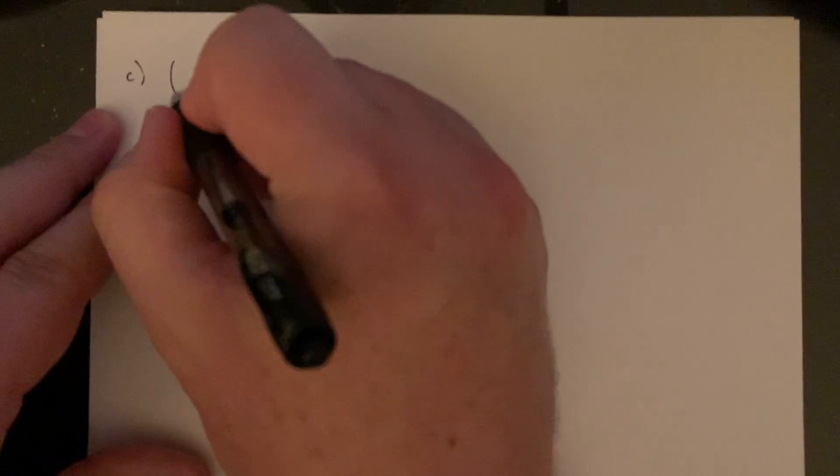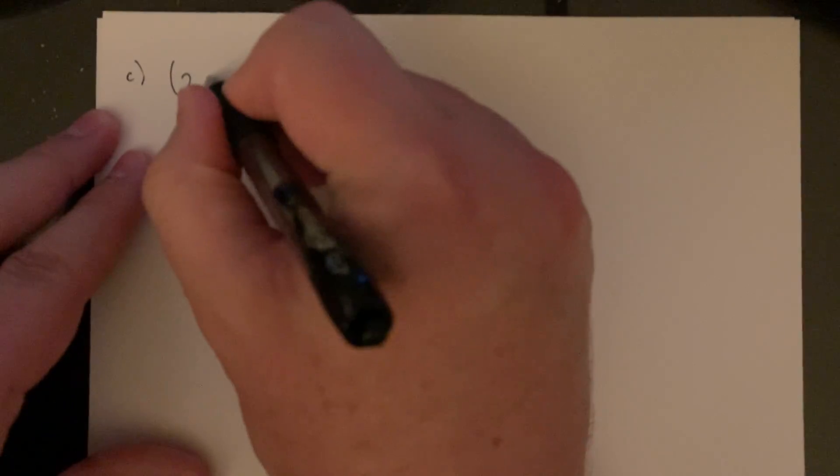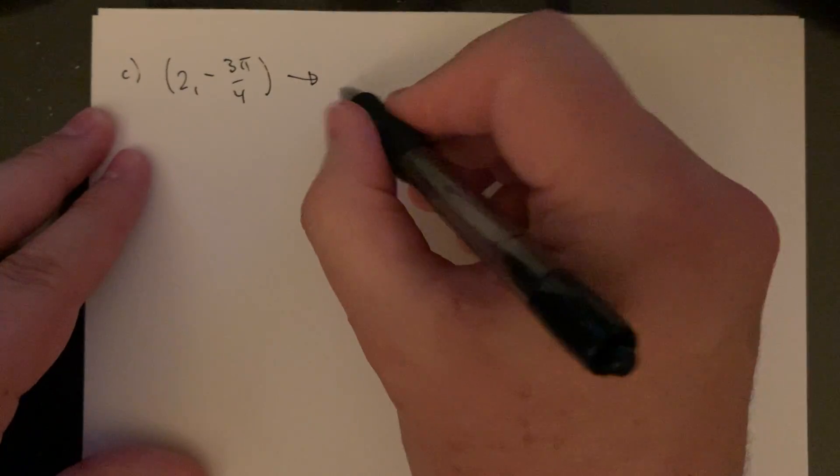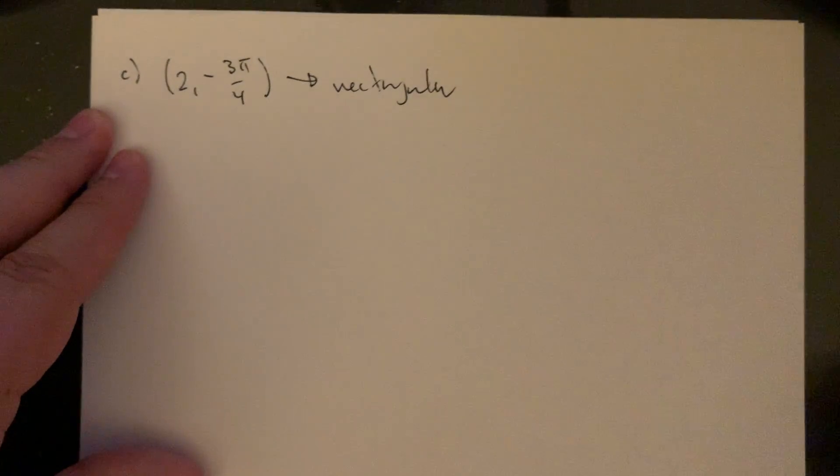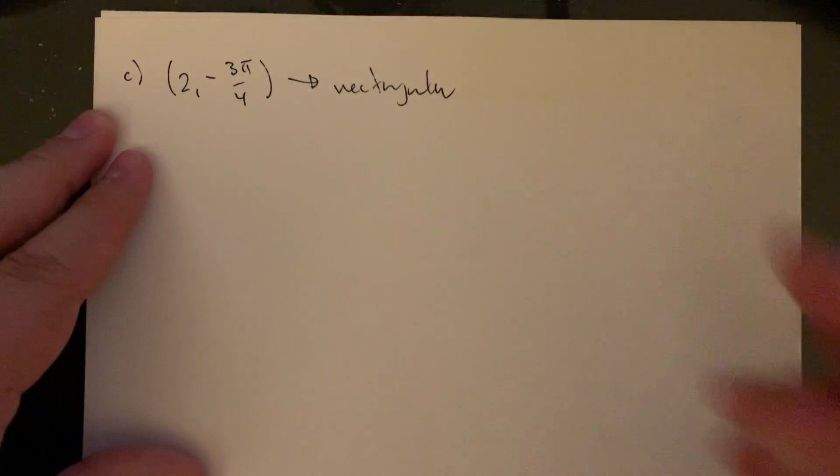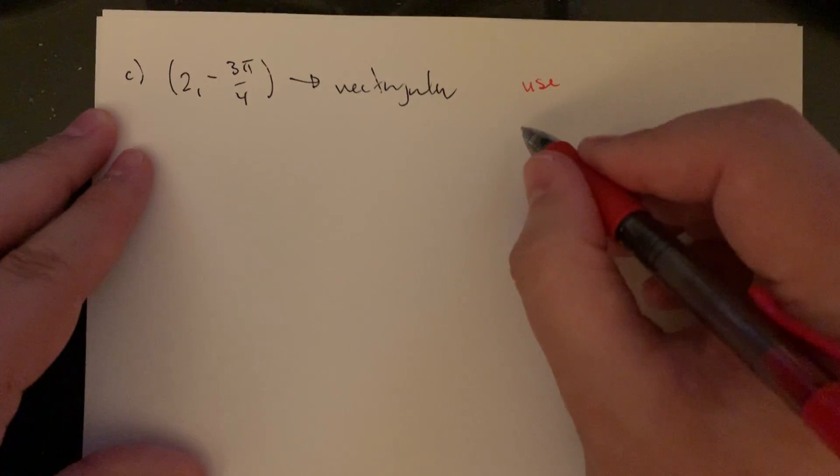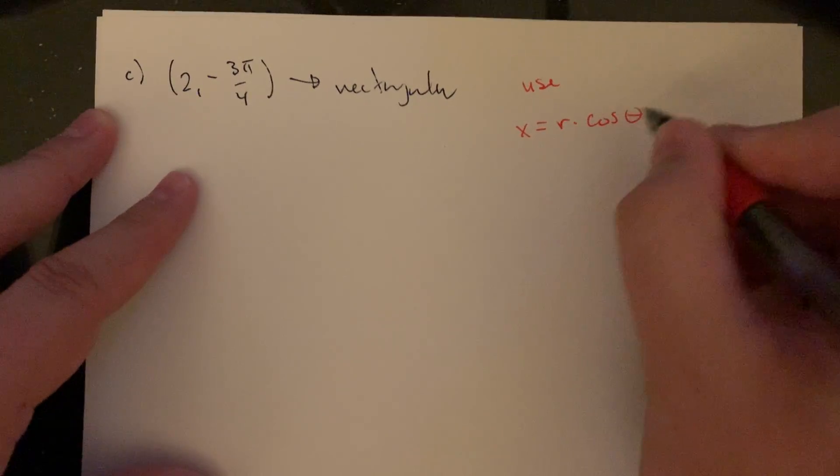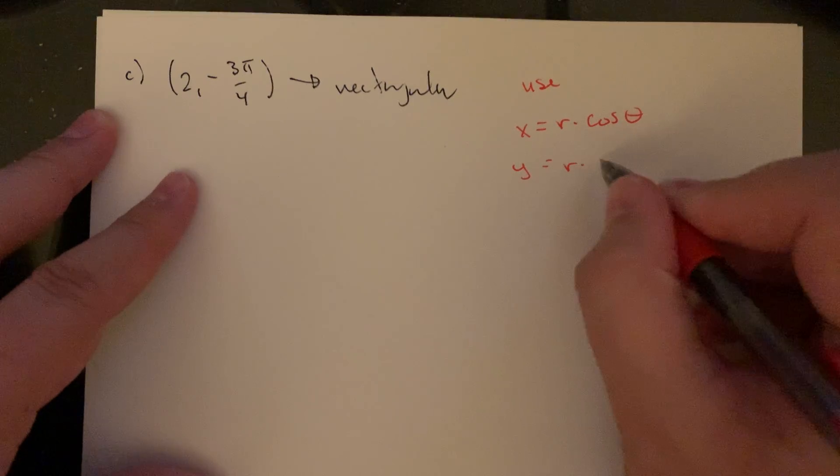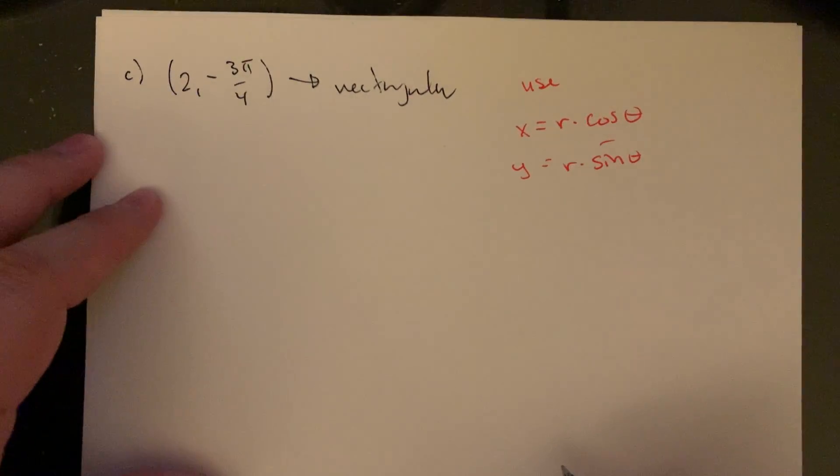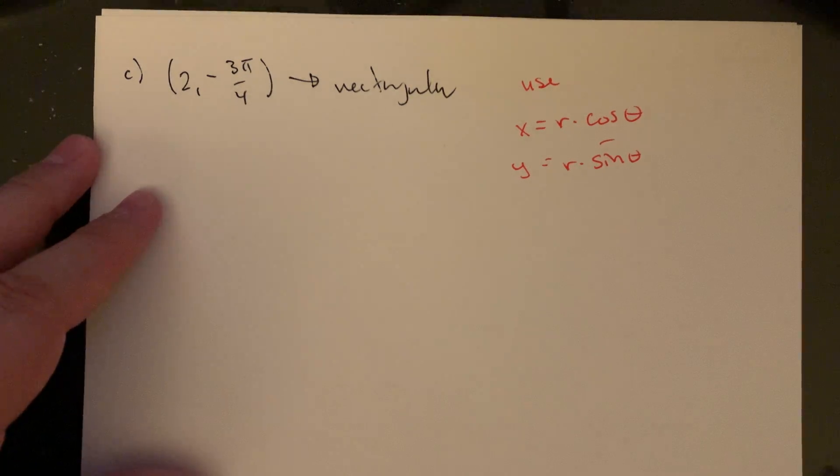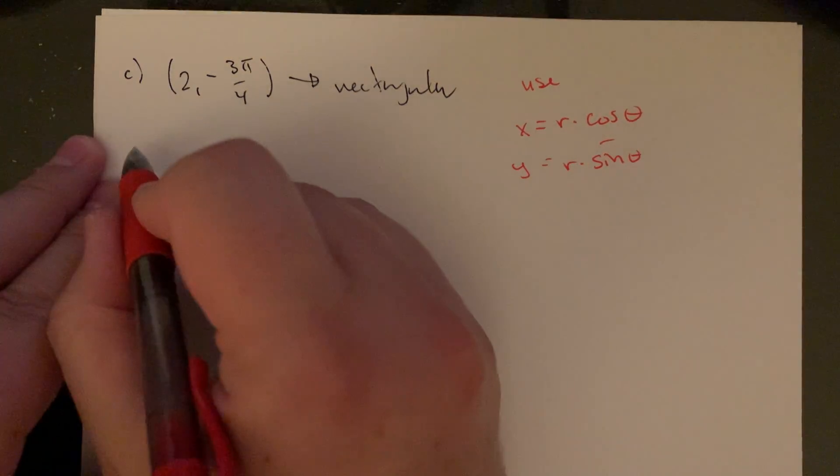So let's run this the other direction. What if I have the value 2 and then negative 3 pi over 4? So that's in polar coordinates, and I want to convert this into rectangular. So in that direction, I'm going to use the other two formulas. x is the radius times cosine of theta, and your y value is the radius times the sine of theta. So those are just two straightforward formulas that we're going to sub our radius and our angle into and just get values out of. These are not very mysterious at all.